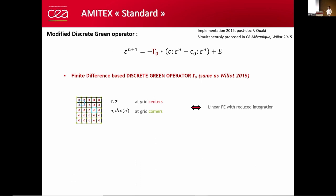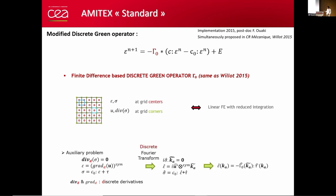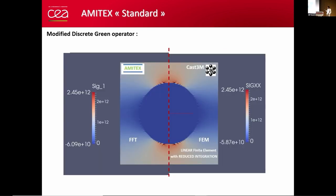One word about the Green operator. It is based on finite differences, with the strain and stress defined at the centers of the voxels and the displacement and divergence of sigma defined at the corners. This is strictly equivalent to the use of linear finite elements with reduced integration. On the left, we've got a result with AMITEX. On the right, the result is a real finite element code. We've got exactly the same results.